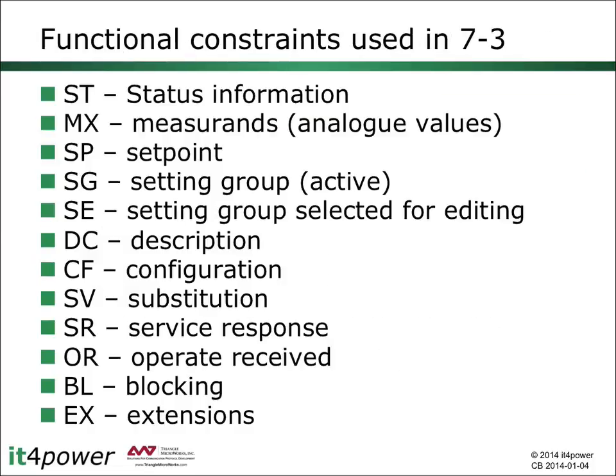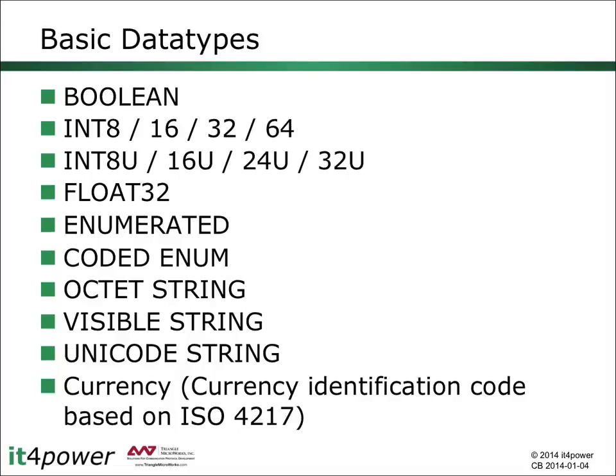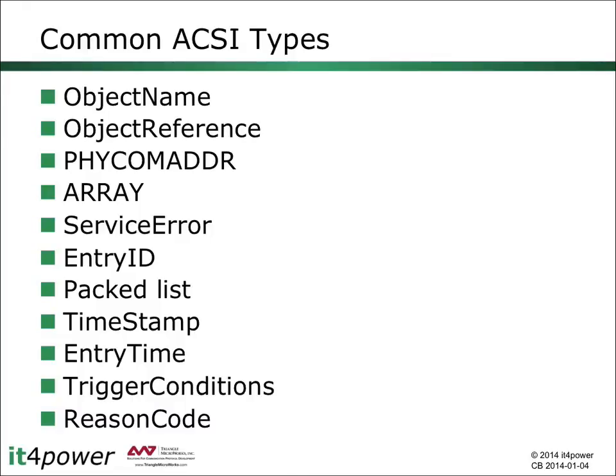Part 7.3 also provides an overview of the various functional constraints used in the context of common data class specifications. There are additional functional constraints used for the control block models of the abstract communication service interface definition, but this is out of scope for this presentation. Part 7.2 defines the basic data types and the common ACSI types.